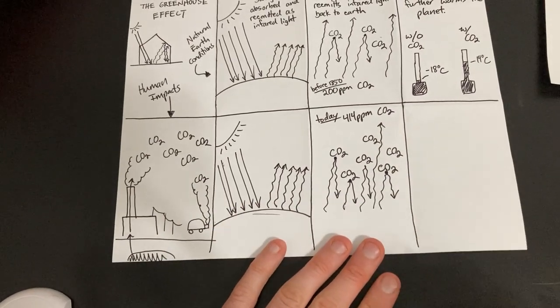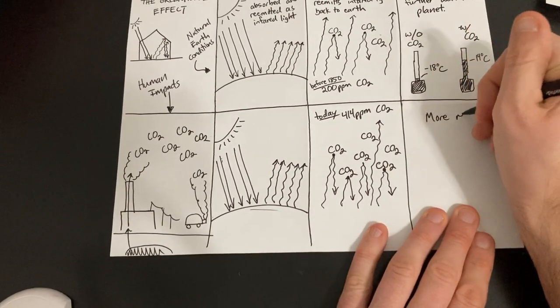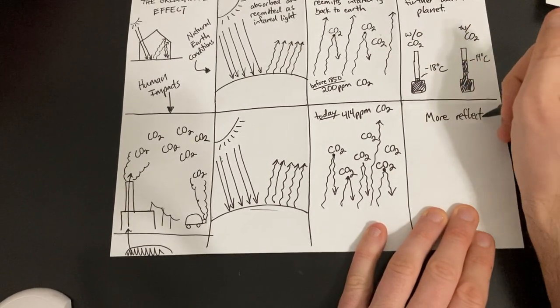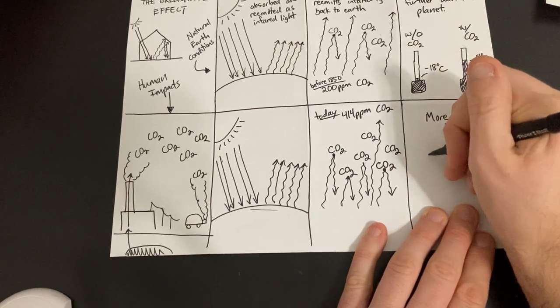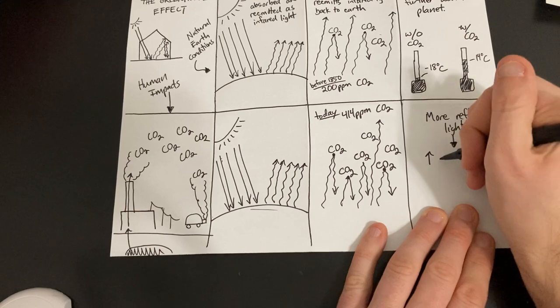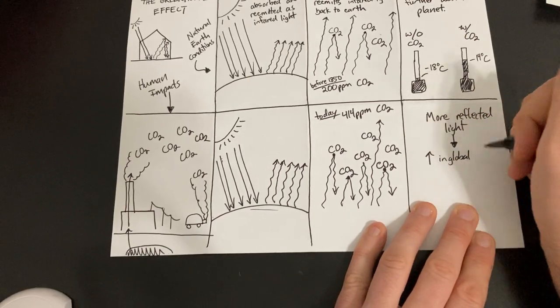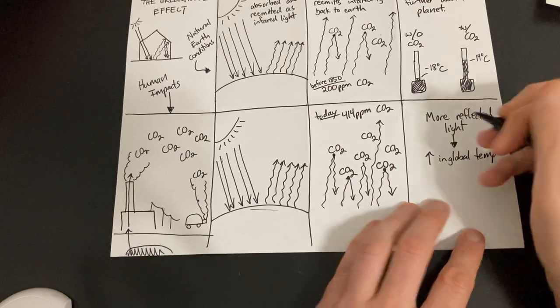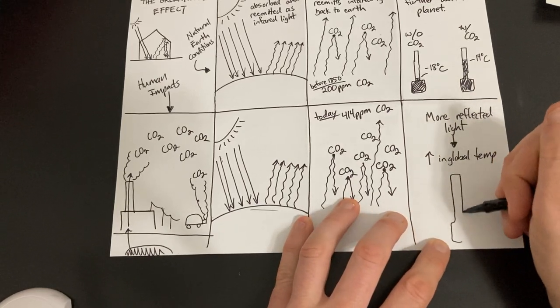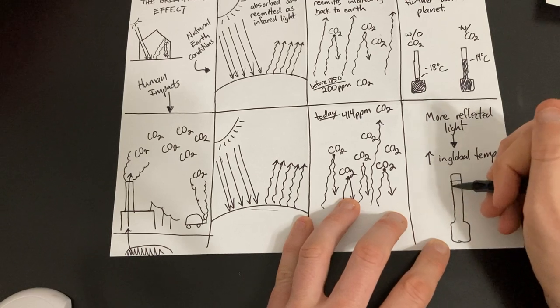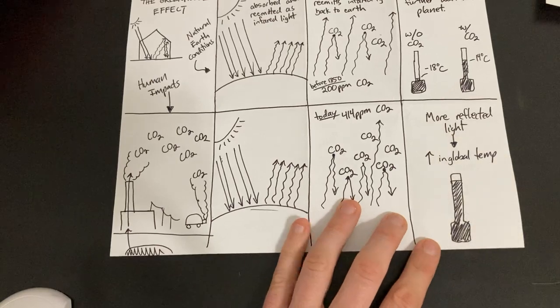And as a result, more reflected light means an increase in global temperature. And I'm just going to draw our thermometer and I'm just going to show it being at a much, much higher level.